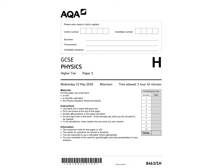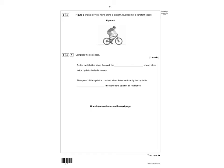Hello, I'm just going to go through question four from the GCSE Physics paper from May 2018. For question four, figure five shows a cyclist riding along a straight level road at a constant speed.